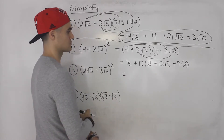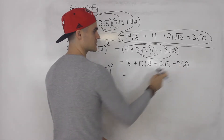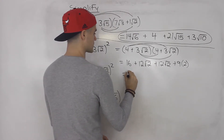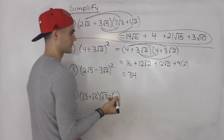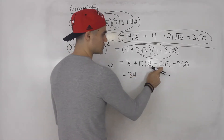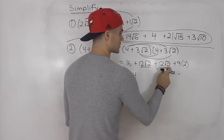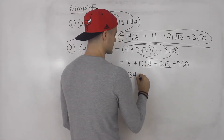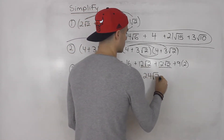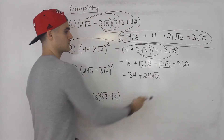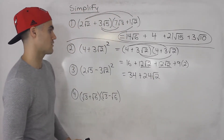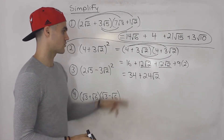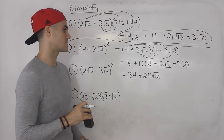Here we have like terms. 9 times 2 is 18, and 18 plus 16 gives us 34. Then 12√2 plus 12√2 are like terms — the radicals are the same — so we add the coefficients to get 24√2. We can't simplify √2 any further, and we can't add 34 and 24√2 since they're not like terms. So the final answer is 34 + 24√2.